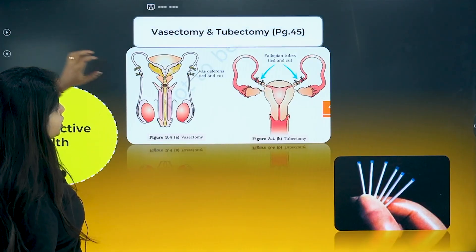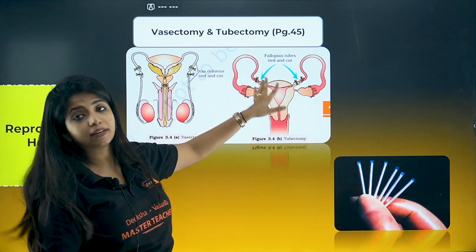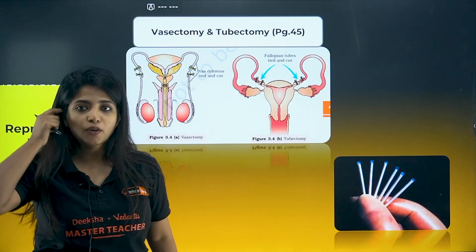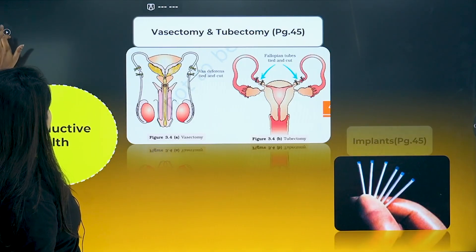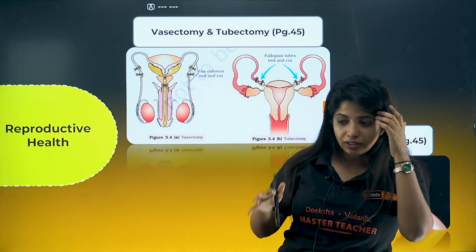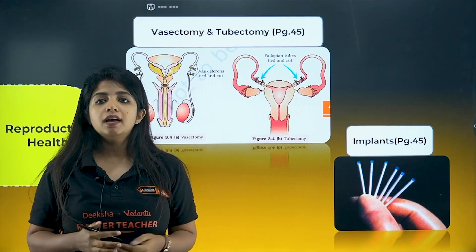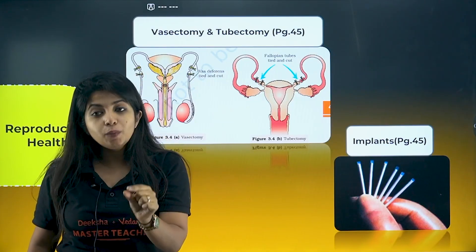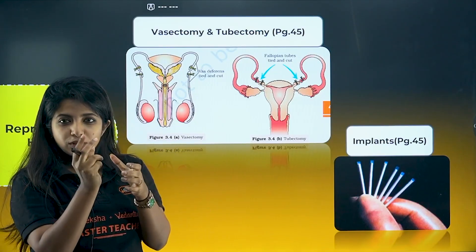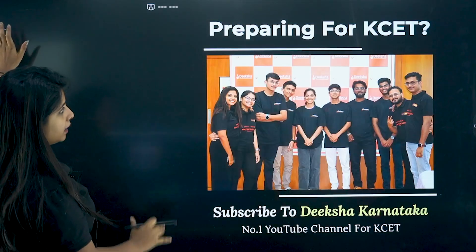In Reproductive Health — vasectomy is where you cut the vas deferens; tubectomy is where you cut the fallopian tube. Implants are placed under the skin and release hormones — estrogen and progesterone. These hormones normally support ovulation, but when you create an imbalance by giving extra, ovulation does not happen, the endometrium becomes thin, and the cervix is blocked with mucus. So the sperm won't be able to enter.